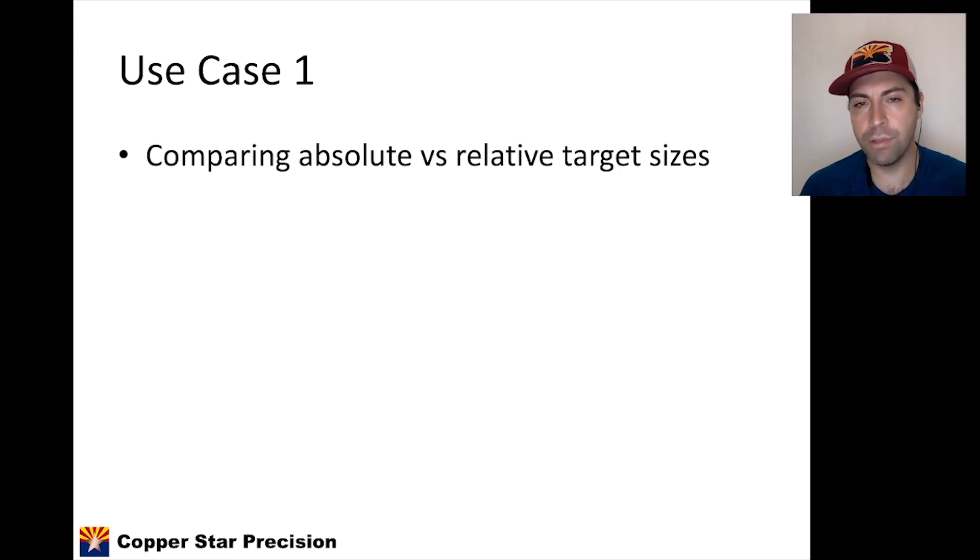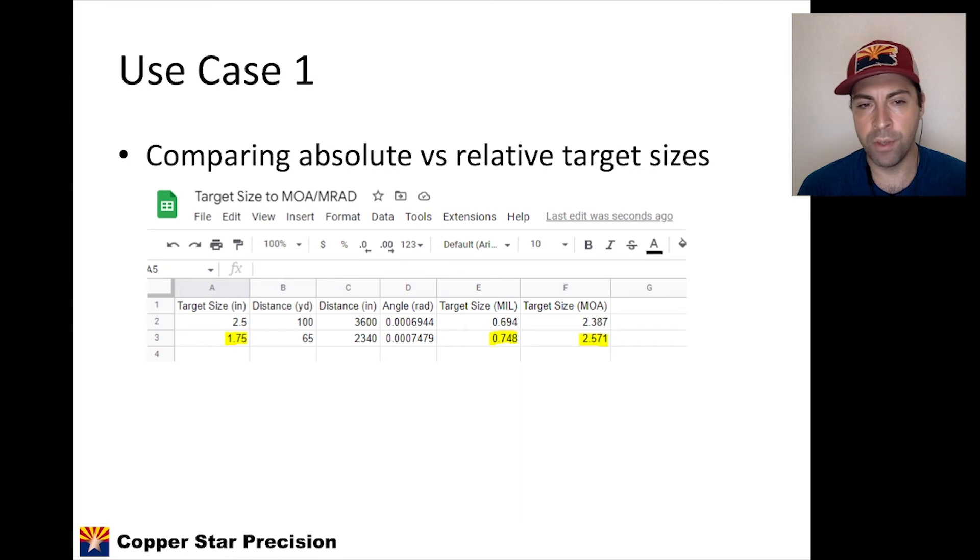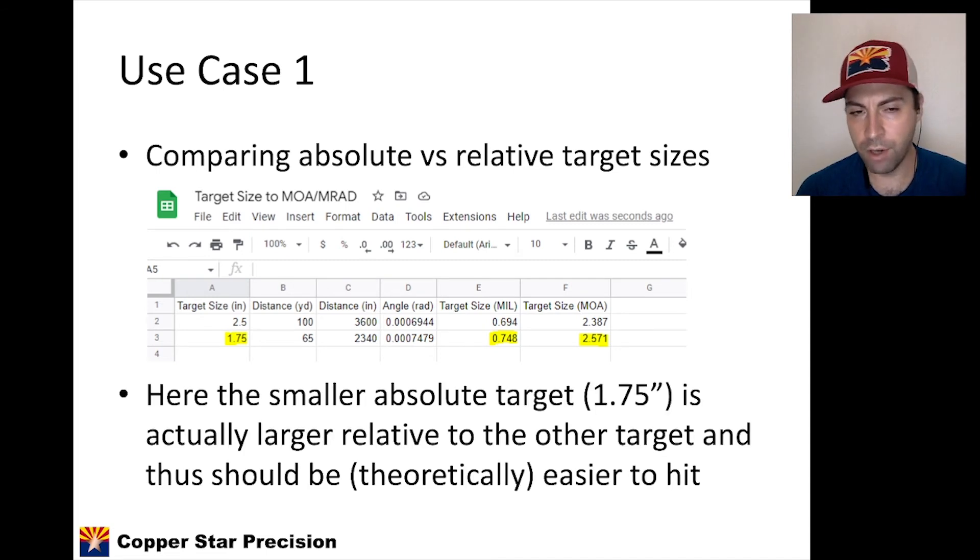Like I said, we're going to compare the absolute size of a target versus its relative size and the angle that it makes from our shooting position. Here I have the same exact spreadsheet as before with the same example in row two. In row three, I put a new target. It's a 1.75-inch target at 65 yards. Something interesting happens. The second target is smaller in absolute terms. It's 1.75 inches, smaller than 2.5 inches. But it's actually a slightly larger target than the first target because if we look at the mil or MOA columns, we notice that it's slightly larger. So that 0.69 becomes a 0.74 and that 2.3 MOA is a 2.5 MOA. So it's slightly larger and should be theoretically easier to hit.